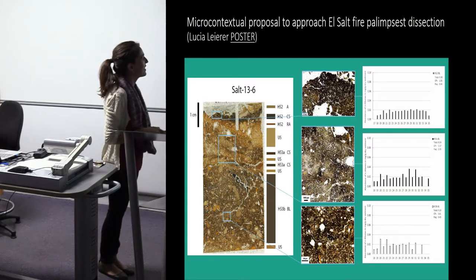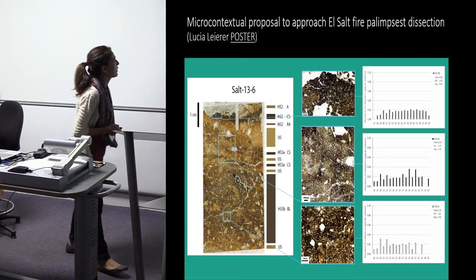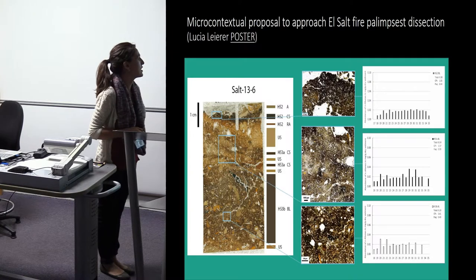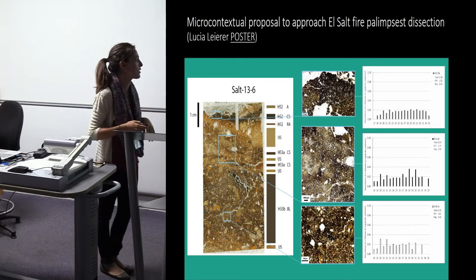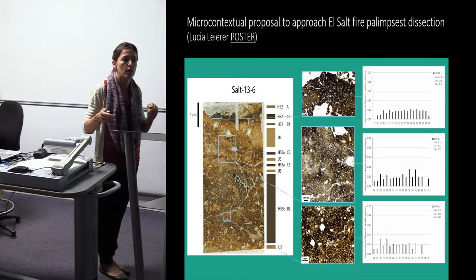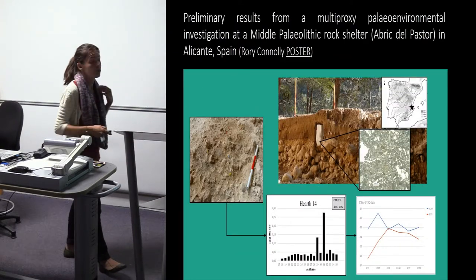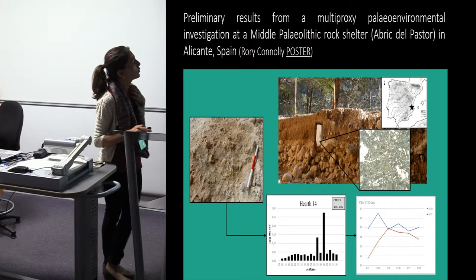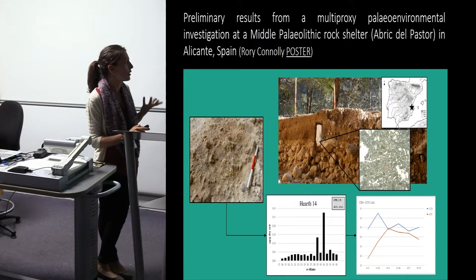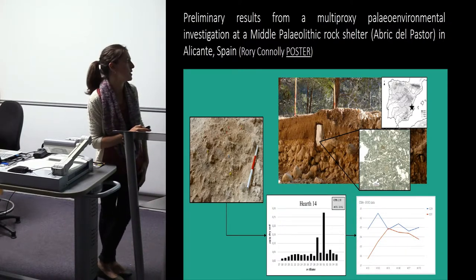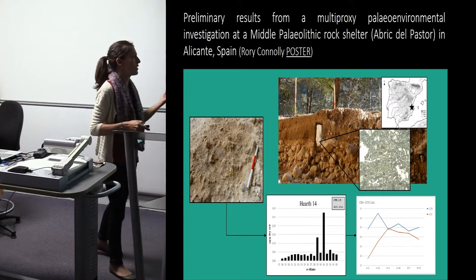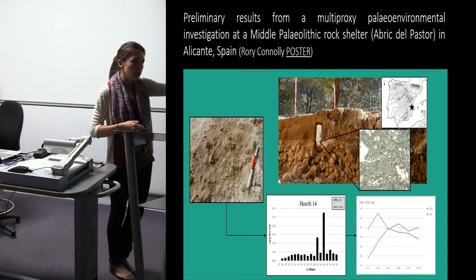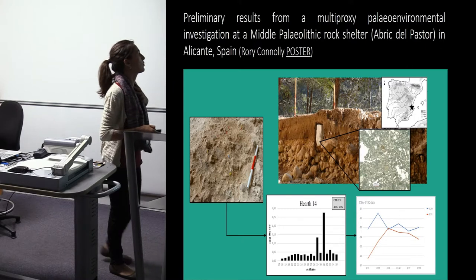Tomorrow you can see a poster by grad student Lucia Lyra, who is working in Middle Paleolithic contexts trying to dissect palimpsests of multiple overlapping fireplaces on the same occupation surface and distinguish different fire uses. You can also visit a poster by Rory Connelly, who is using compound-specific isotope analysis to reconstruct paleohydrology and climate in Neanderthal contexts, where there are hypotheses about climate change requiring good sampling with good intervals.